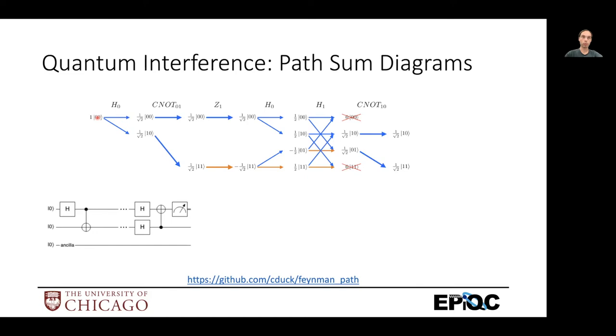And the Hadamard gate basically makes a superposition of the two qubits. And so we show that in this diagram as a splitting of two possible classical states. So now it's either in the 0, 0 state or the 1, 0 state with equal amplitudes. The CNOT gate simply takes a binary input and converts it to another binary state. So it does nothing if the qubit is 0 and it toggles that 1 if the qubit is 1.